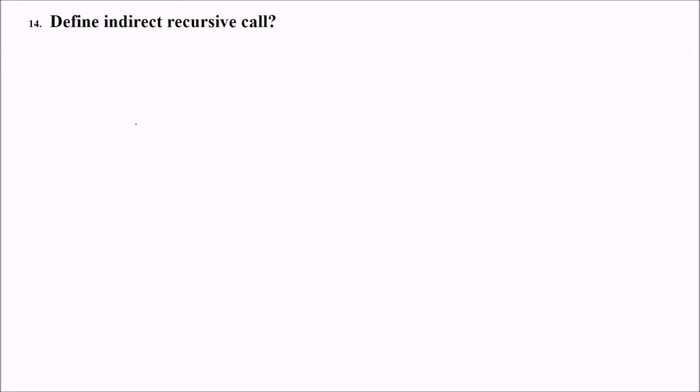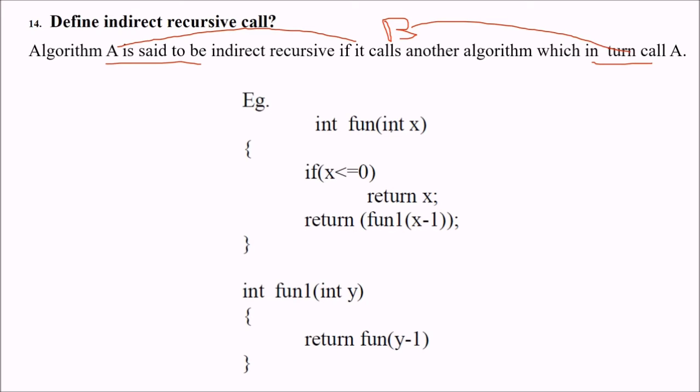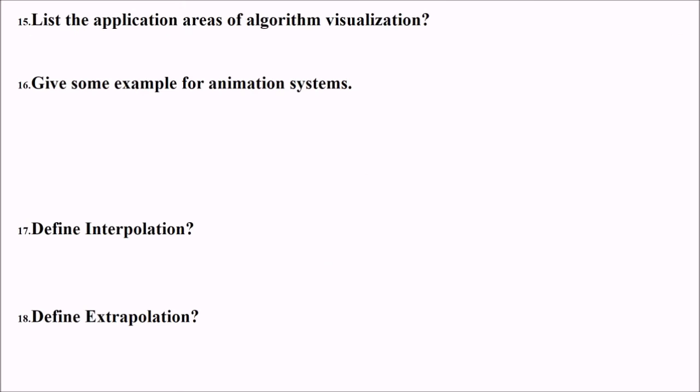What is indirect recursive call? An algorithm is said to be indirect recursive call if it calls another algorithm which in turn calls A. A is calling some algorithm B and then B is calling A. This is function 1, the main function. This function is calling function 1 and this function is calling again this function. So this is a recursive call but an indirect recursive call.